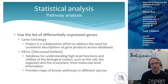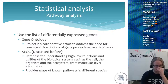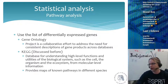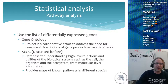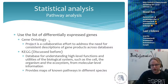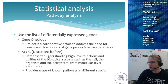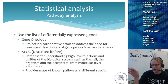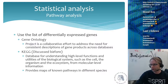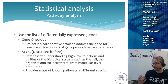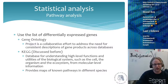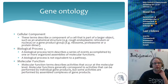Gene Ontology is a collaborative project providing consistent descriptions of gene products across databases. Every gene in the genome is annotated across three categories. The first is cellular component: where the gene product is located or active — in the nucleus, endoplasmic reticulum, cytosol, or extracellular matrix. If most differentially expressed genes are annotated to mitochondria, it suggests closer examination of mitochondrial function in the next experiment.